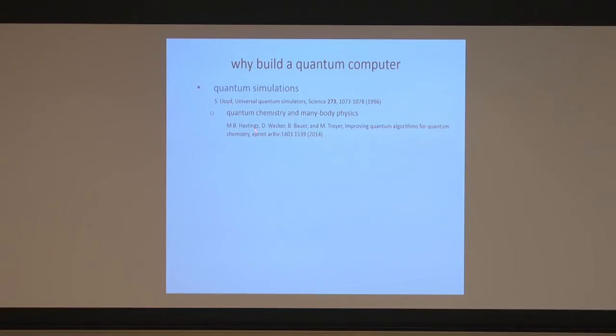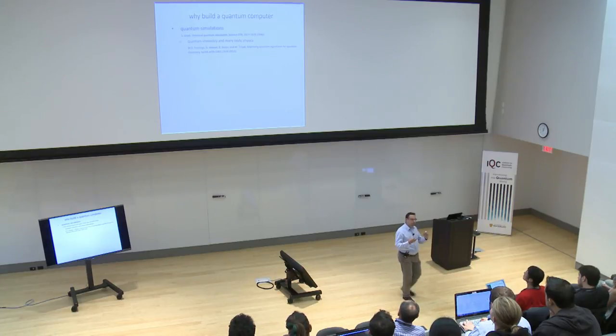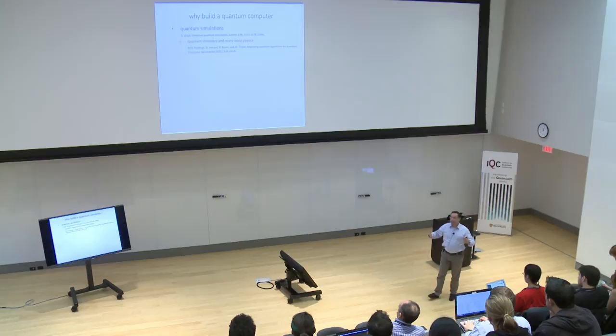Very recently, the Microsoft group headed by Matt Hastings worked on a refinement of quantum simulation algorithms from the 1990s. They showed that quantum simulators can be used to simulate quantum chemistry and many-body physics. In particular, they showed the number of gates required to efficiently simulate quantum chemistry can be two orders of magnitude fewer than we thought six to eight months ago — results I find very exciting.